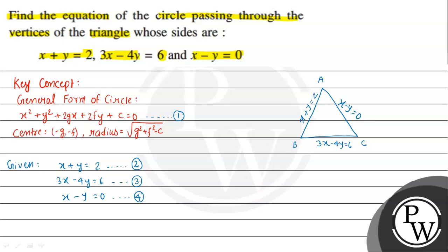This circle passes through the vertices of the triangle, so let us consider this is the required circle C1. We have to find the equation of this circle. The circle passes through vertices A, B, and C, so we need to find their coordinates.